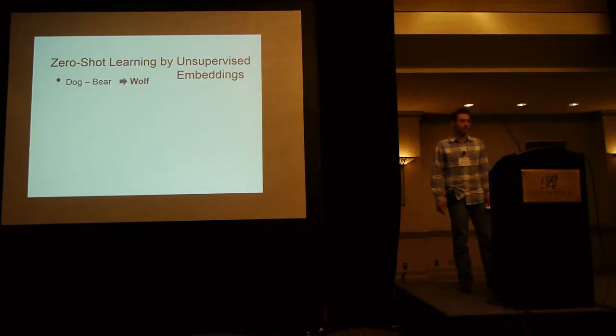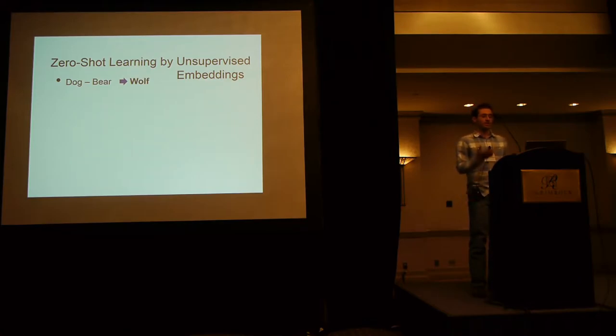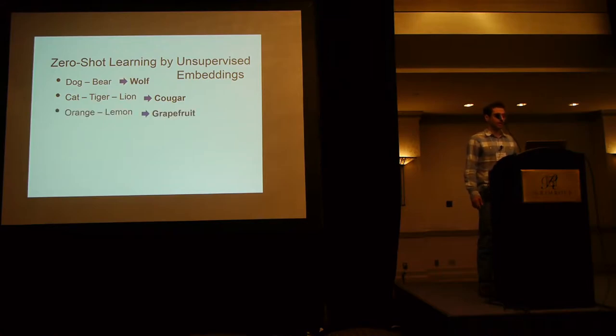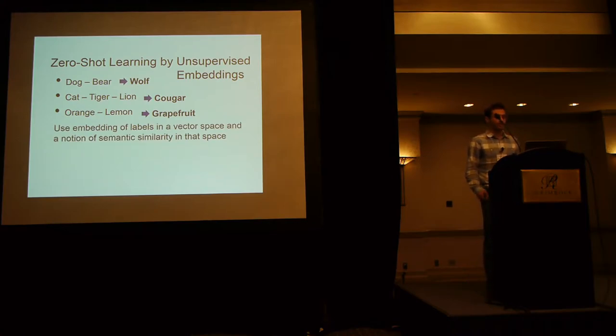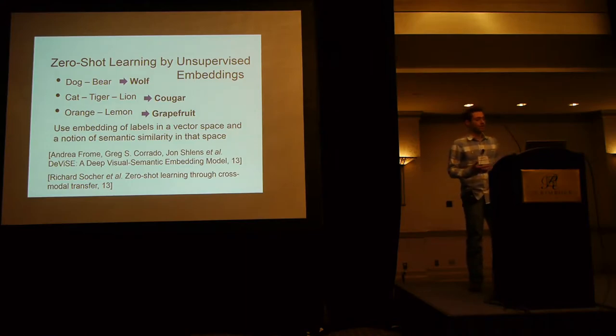The approach that we are taking is using unsupervised embedding of the labels and concepts. So, because it's unsupervised, we can work with very many classes, and what it gives us is something like this. For example, it tells us that wolf is something similar to dog and bear, and cougar is something similar to cat, tiger, female lion, and grapefruit is something between orange and lemon. So, by using the embedding of labels in a vector space, and the notion of semantic similarity in that space, we can generalize to unseen concepts. This approach had become very popular recently. There had been two papers at NIPS last year, and I'll talk about them briefly in the next slides.